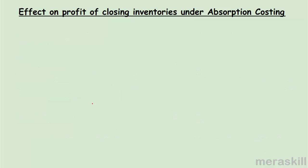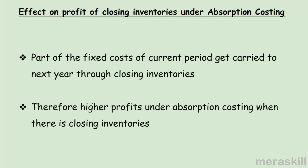If the value of closing inventories is higher, profits will be higher — because those goods are not sold; they are treated not as an expense but as an asset. So part of the fixed costs of the current period get carried forward to the next year under absorption costing. Therefore, there are higher profits under absorption costing when there are closing inventories.